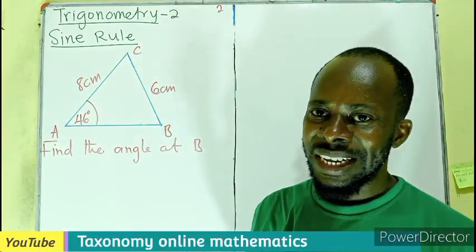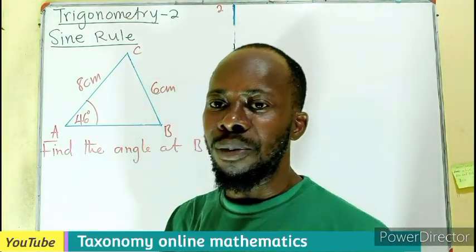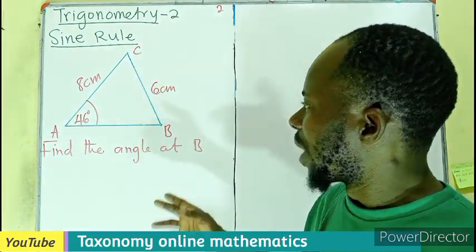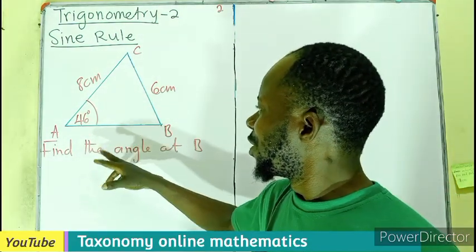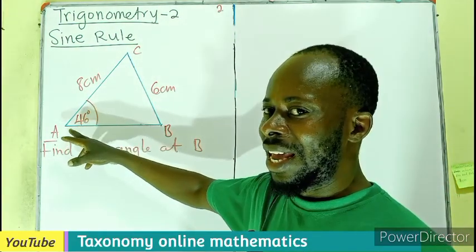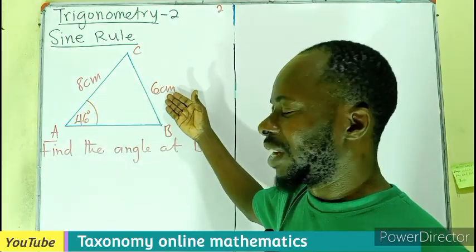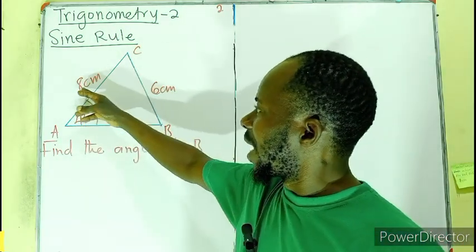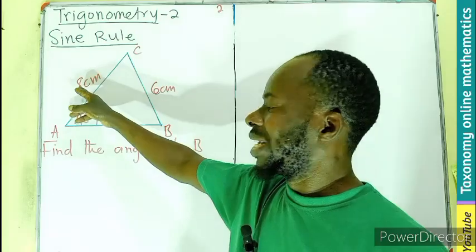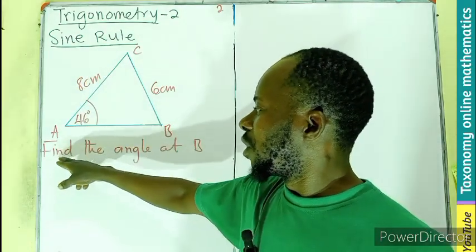Welcome to another episode on the sine rule in Trigonometry 2. Here we have a triangle ABC with angle A at 46 degrees facing the side 6 cm. The side facing B is 8 centimeters; this is not given.